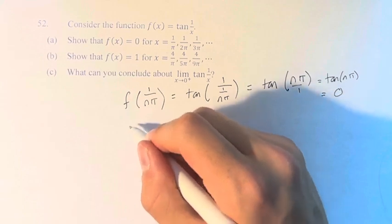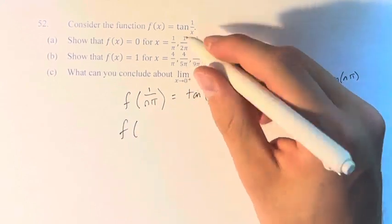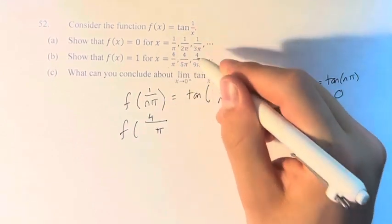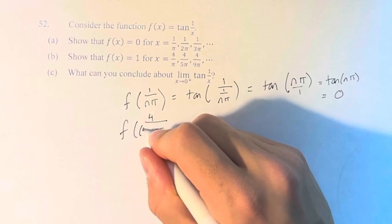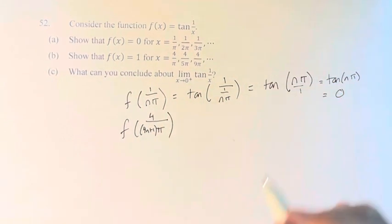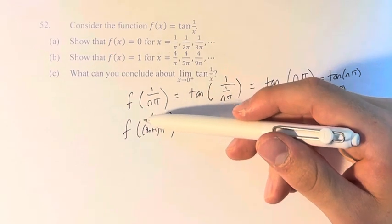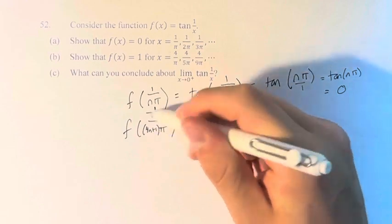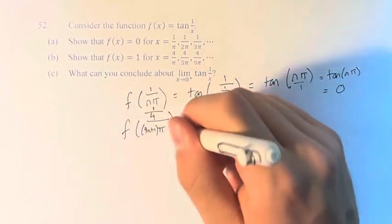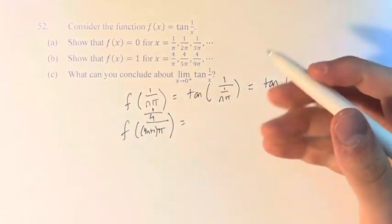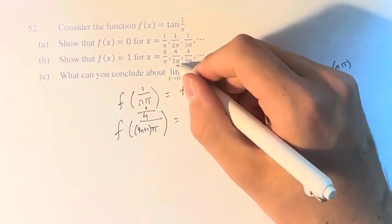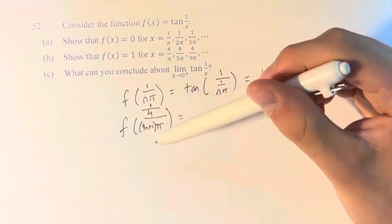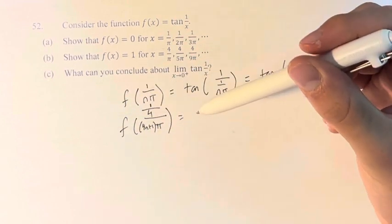Meanwhile, f(4/(π(4n+1)))—and sorry, it should be 1 over this. We can solve for this, but I think it's easier to just plug this into a calculator, and you'll get your values by plugging in 4/π, 4/5π, 4/9π. There's not a super easy way to think about this.